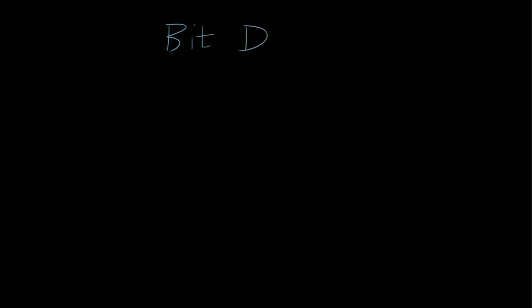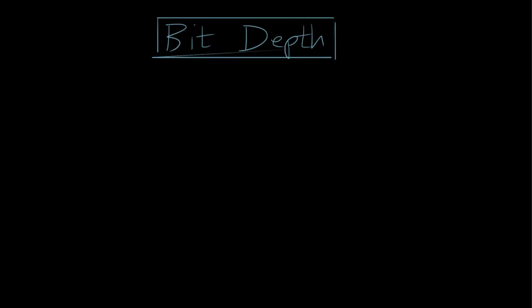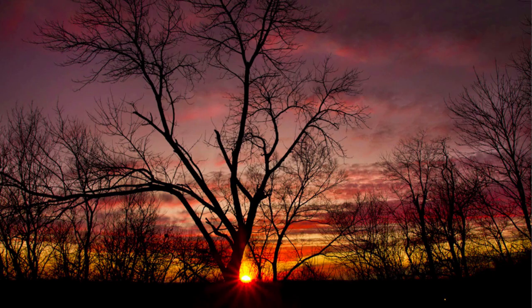Now let's talk about bit depth. Bit depth is an important concept not just for codecs but for editing and rendering. The best way to think about bit depth is the number of values you have between dark and light. If you have a very deep bit depth, you won't see any banding in a gradient — it'll be super smooth. But if you don't have enough possible values, you start seeing artifacts that look like bands or lines.